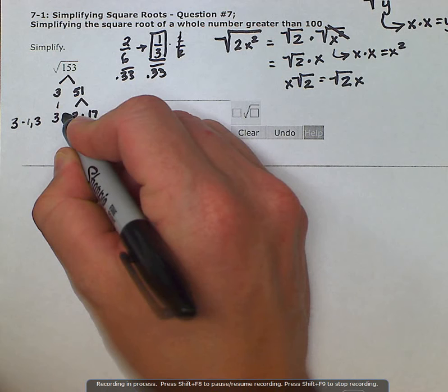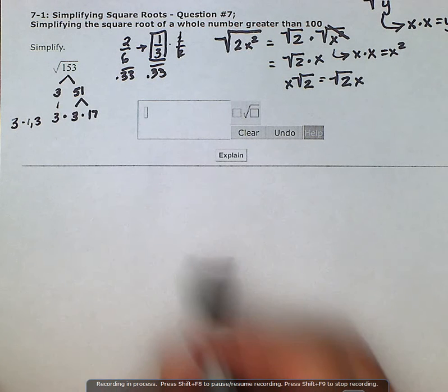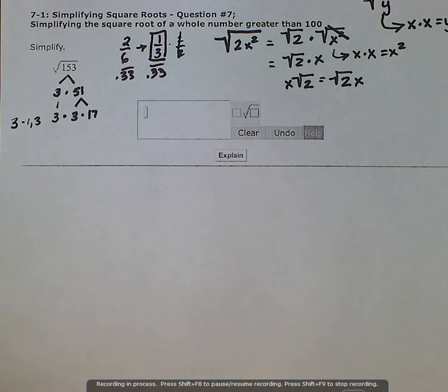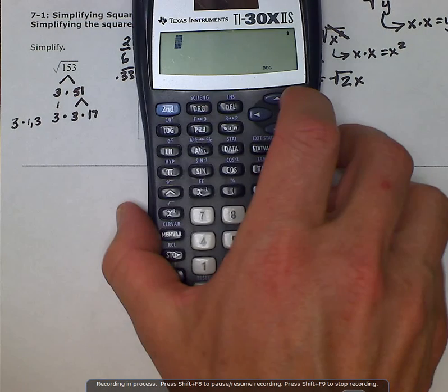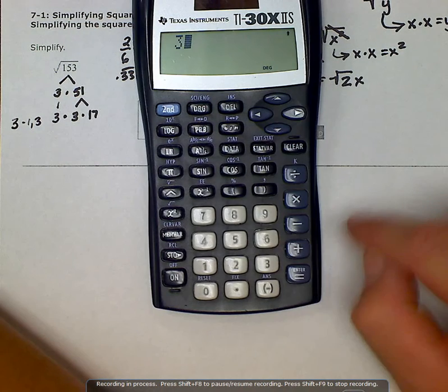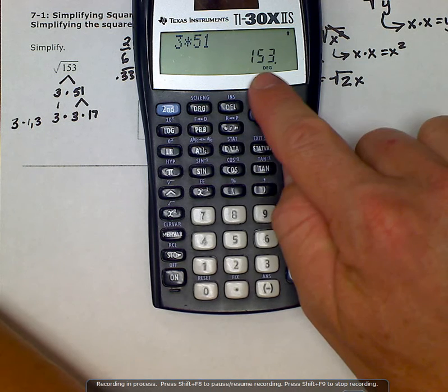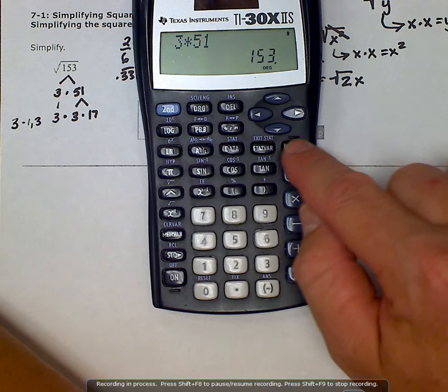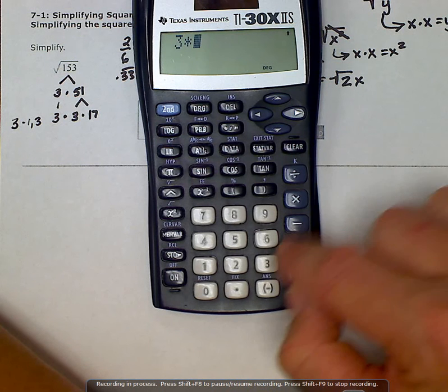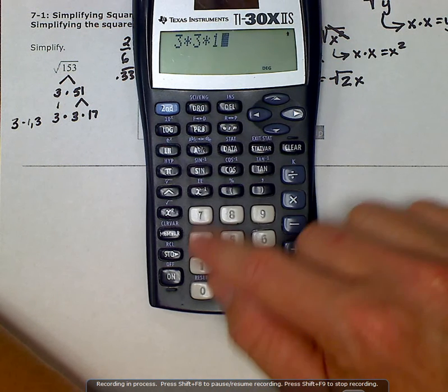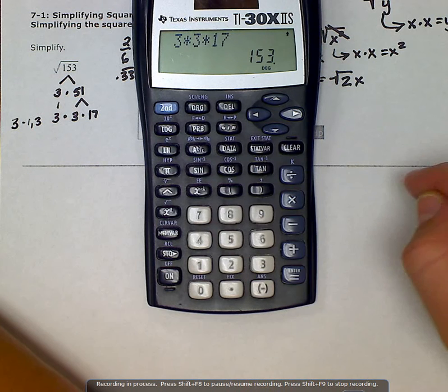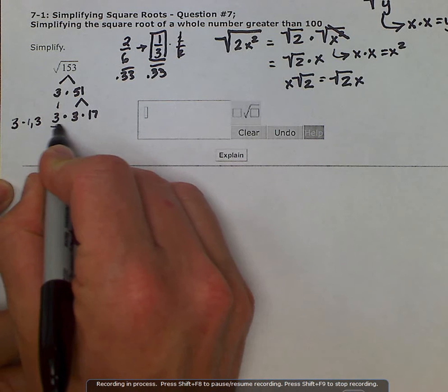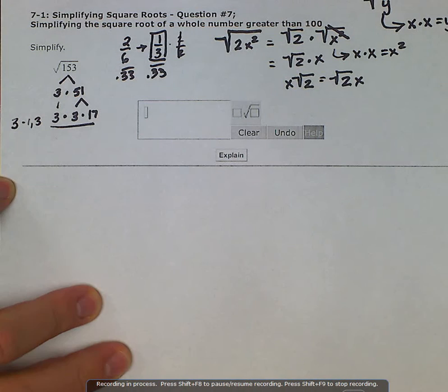And what we're doing here is we're just creating equivalent expressions. 3 times 51 is 153, and I should show you so that we can see it more clearly. 3 times 51 is indeed 153. It's the same. And then if we break it down even further, 3 times 3 times 17 is still equal to 153. So this is what we call prime factorization because we have only prime numbers here at the bottom.